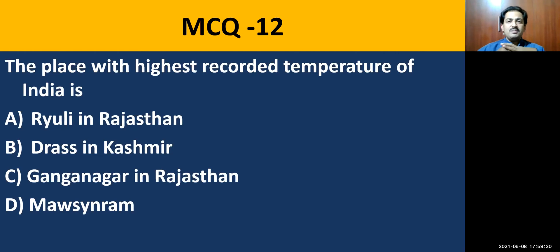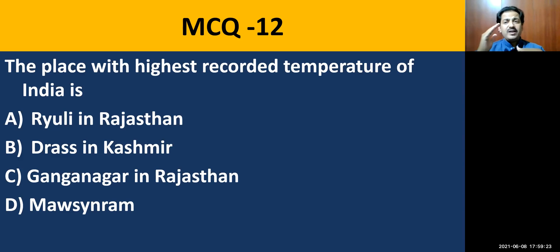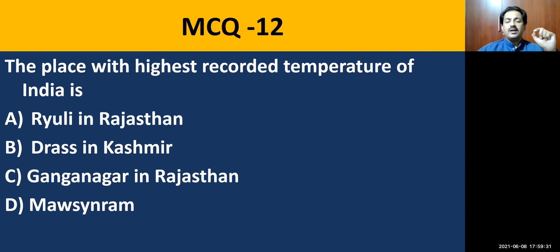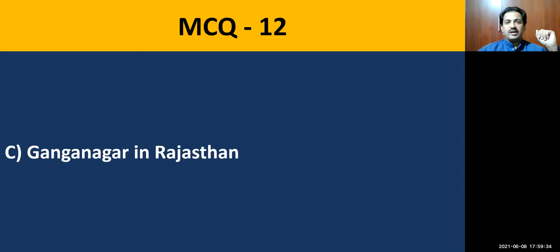MCQ question number twelve: the place with the highest recorded temperature of India is Ganganagar in Rajasthan. These two questions are purposefully repeated because you need to concentrate on them.